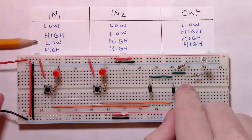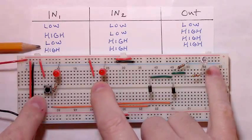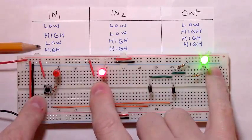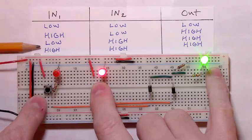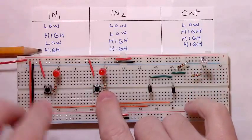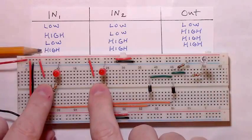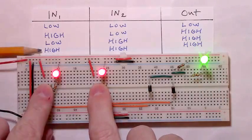The third row is that whenever input 1 is low but input 2 is high, then the output LED should be high. And in fact it is. Going to the final state, whenever both inputs 1 and 2 are high, the output LED should be high. And it is.